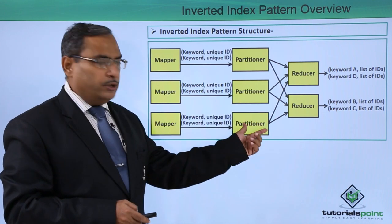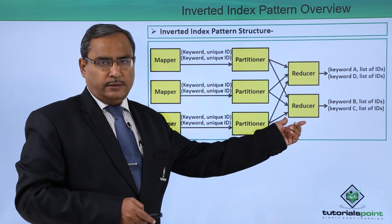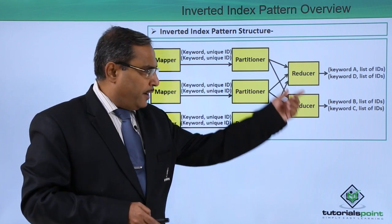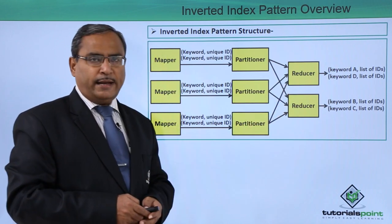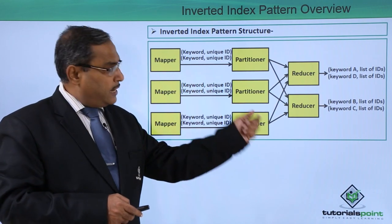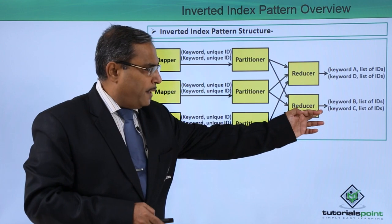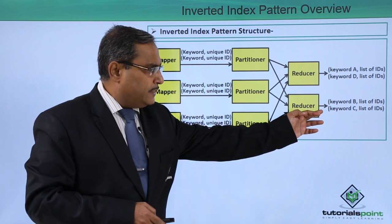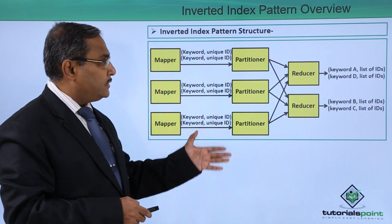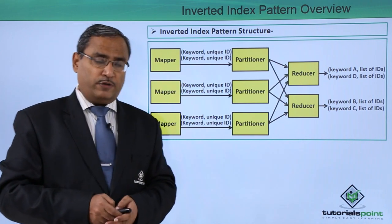The partitioner will do the shuffling operation, and then the partitioner's output will go to the reducer. The reducer will produce keyword A with a list of IDs, keyword B with a list of IDs, keyword C with a list of IDs, and keyword D with a list of IDs. This is our inverted index pattern overview.